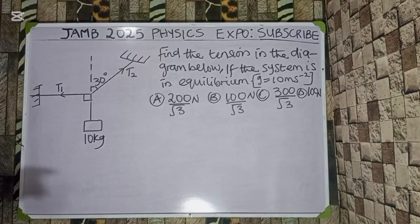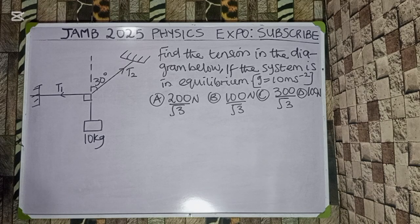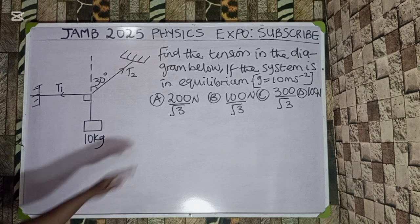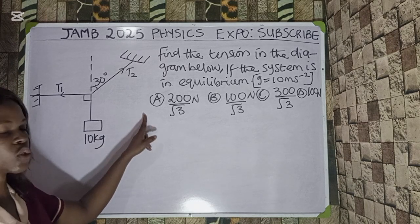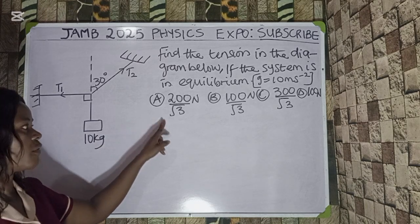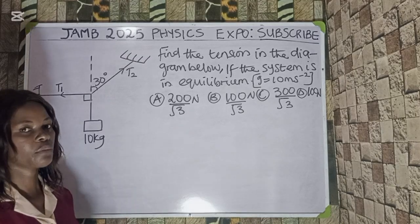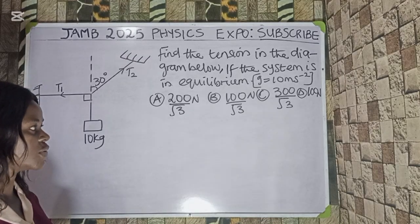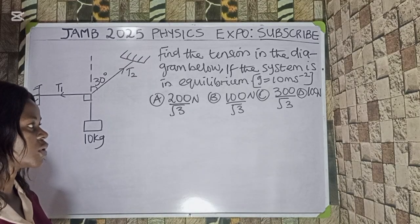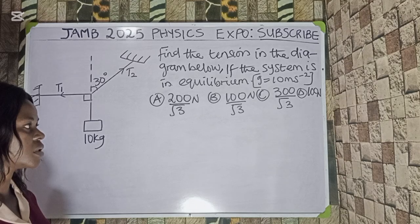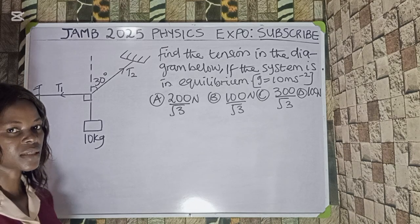We are going to use this diagram to answer the next question. Find the tension in the diagram below. If the system is in equilibrium, we have g equal to 10 meters per second squared. We have the following options — option A: 200 over root 3 newton, option B: 100 over root 3 newton, option C: 300 over root 3 newton, option D: 100 newton.